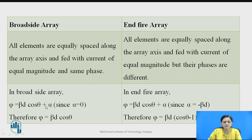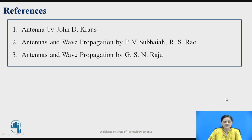By putting alpha equal to 0, phi becomes equal to beta*d*cos(theta) for broadside array. In end fire array, by putting alpha equal to minus beta*d, phi becomes equal to beta*d*(cos(theta) - 1). This is the difference between the broadside array and end fire array antenna.